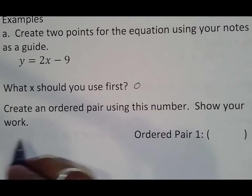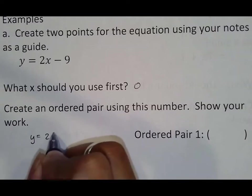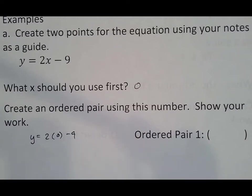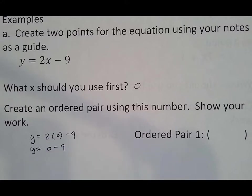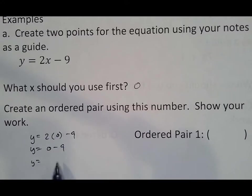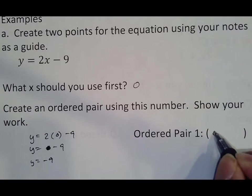So create an ordered pair using that, and again, there's going to be boxes here, so you're going to use this equation, y equals 2 parentheses 0 minus 9. Remember, anything times 0 is 0, and if you have nothing minus 9, you can type that into your calculator, but what typically happens is your 0 goes away, giving us negative 9. So your first ordered pair is 0, comma, negative 9.